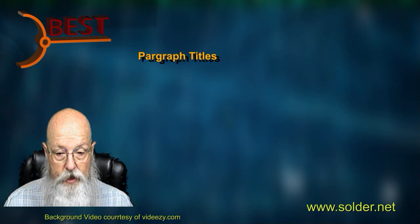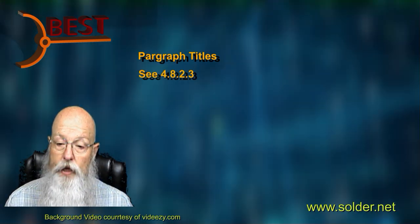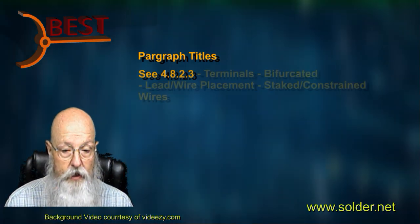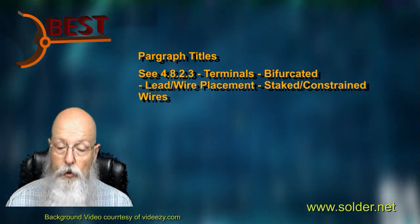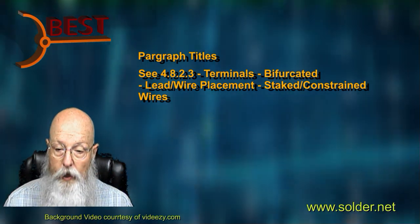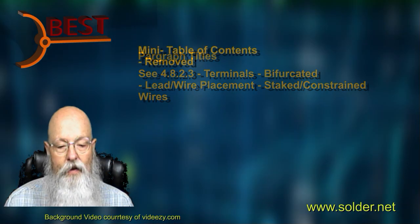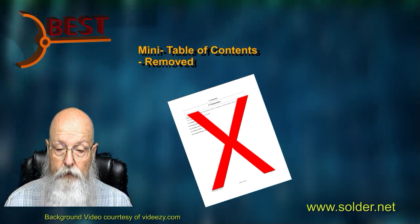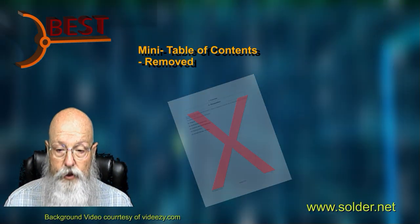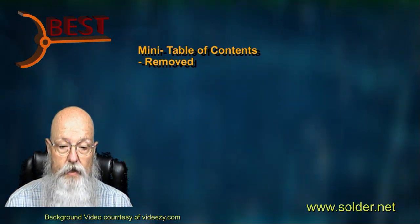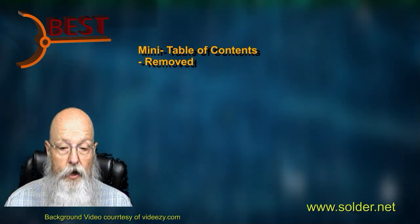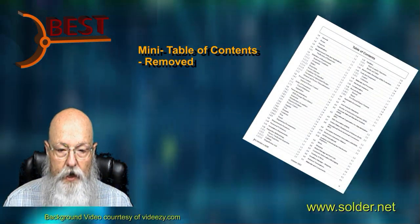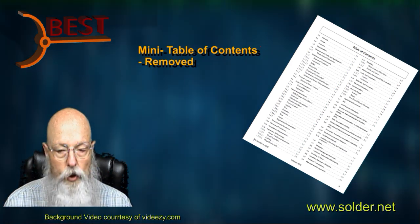For example, in Revision D, a reference may have simply been C4.8.2.3. In Revision E, the same reference will read C4.8.2.3 Terminals Bifurcated Lead Wire Placement Staked Constrained Wires. Another change is the removal of the mini table of contents from the beginning of each section. The decision was made that a single source of content information was desired, rather than multiple tables of contents. There is a main table of contents at the beginning of the document, and that should be used to reference any portion of the document.